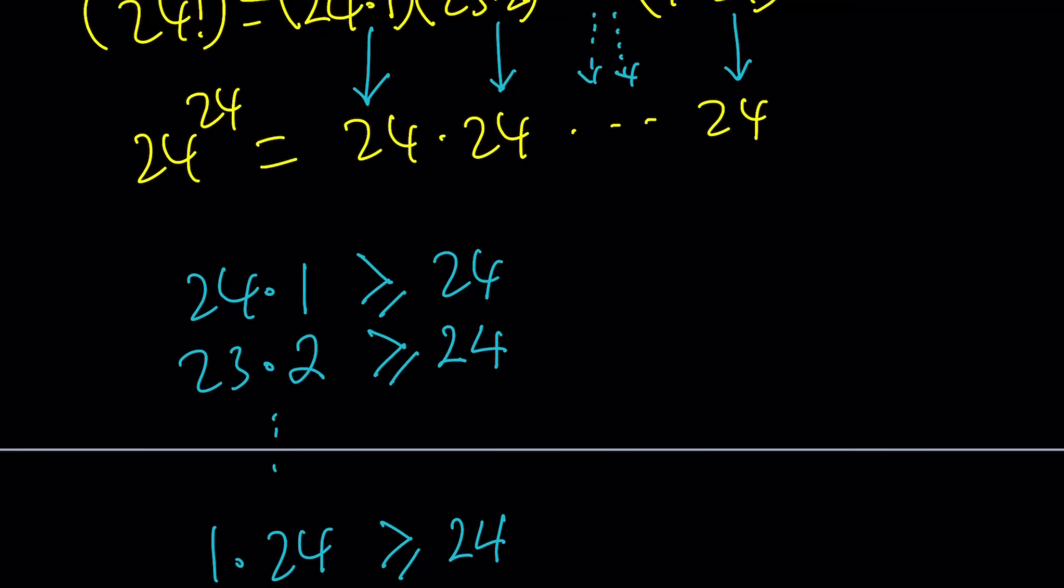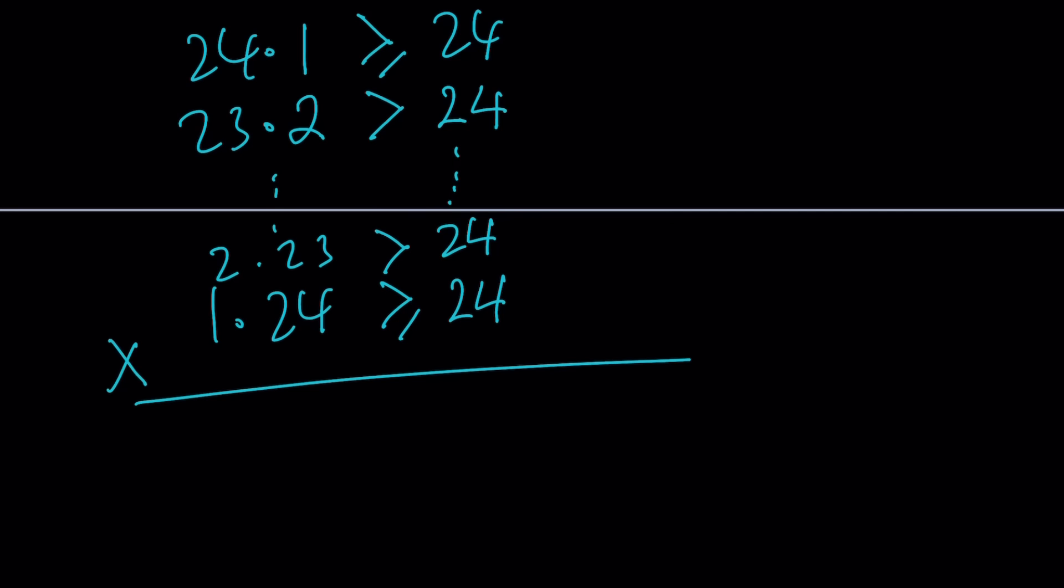Here's the thing. All of these are greater than or equal to signs. Actually, only two of them need to be greater than or equal to, because the other ones can just be greater than signs. This is greater than, and the one before that is 2 times 23, also greater than 24. Notice that, when I multiply all these inequalities, the numbers on the left-hand side will definitely be, as a product, will definitely be larger than the numbers on the right-hand side. Which means, 24 factorial squared is greater than 24 to the power of 24. Obviously, they're not the same, so there's no way they can be equal.